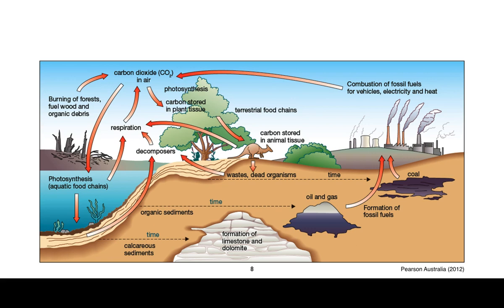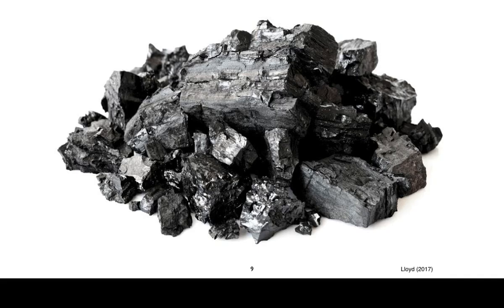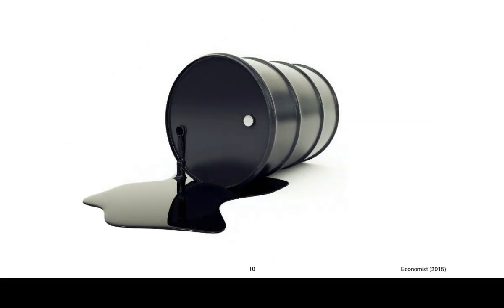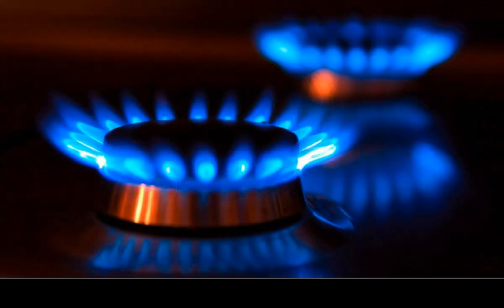What do we mean by feedstock? We're thinking about raw materials used for the manufacturing of other products. For example, crude oil is typically used for the manufacturing of plastics — so rather than burning them to release energy, we use them as raw materials or reactants to convert into useful products. We can discuss the advantages and disadvantages of using carbon-based fuels as sources of heat energy compared with their use as feedstock.